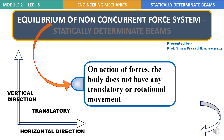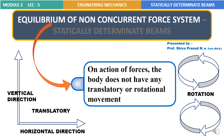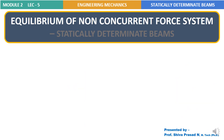Rotational movement means rotation of the body either in clockwise or anti-clockwise direction. In simple words, equilibrium of a non-concurrent force system means that on the action of any number of forces, the body neither shows horizontal direction movement nor vertical direction movement, nor clockwise nor anti-clockwise rotation. Under such a situation, the body will be in equilibrium. Now let's look into the available conditions of equilibrium.